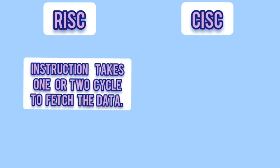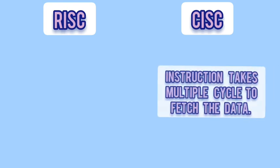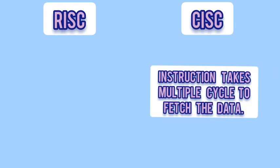RISC takes one or two cycles to fetch an instruction, whereas CISC takes multiple cycles to fetch an instruction.